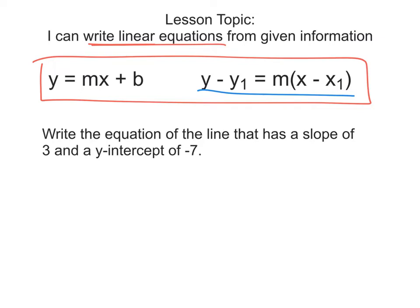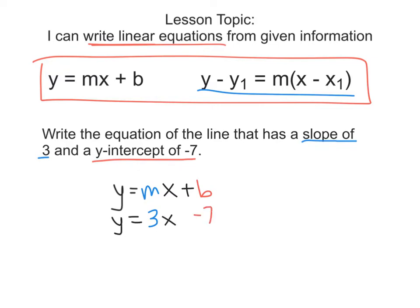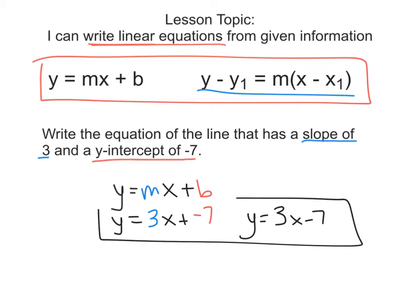For this first example, it says write the equation of a line that has a slope of 3 and a y-intercept of negative 7. When we know our equation for slope-intercept form has slope and a y-intercept in it, that's the one we're going to use. That looks like y equals mx plus b. So we put our slope of 3 in for m and negative 7 in for b, giving us y equals 3x plus negative 7, or y equals 3x minus 7. Either answer works.